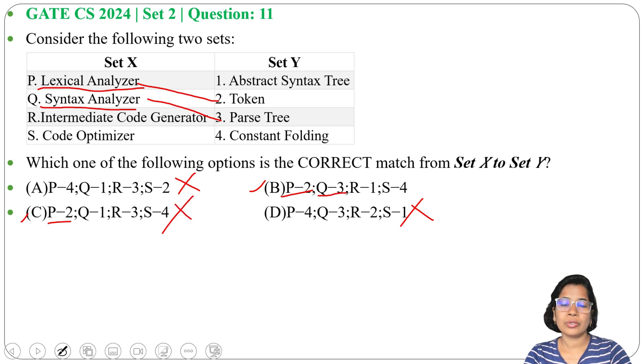Option C is ruled out, so answer will be option B. Intermediate code generation gives the abstract syntax tree, so R matches with 1.